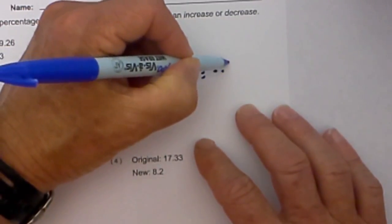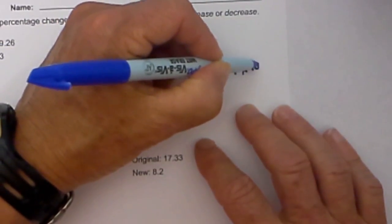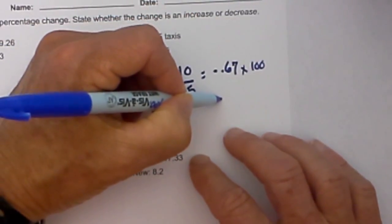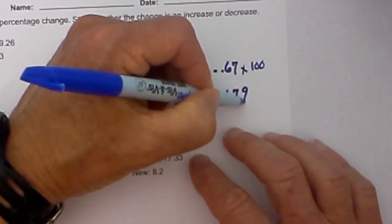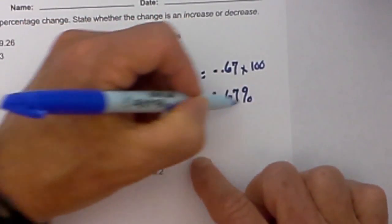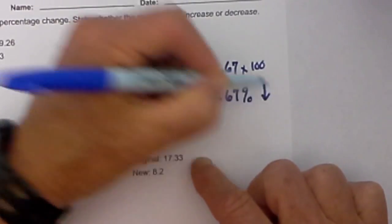Times 100 equals negative 67%, so it's a percent decrease.